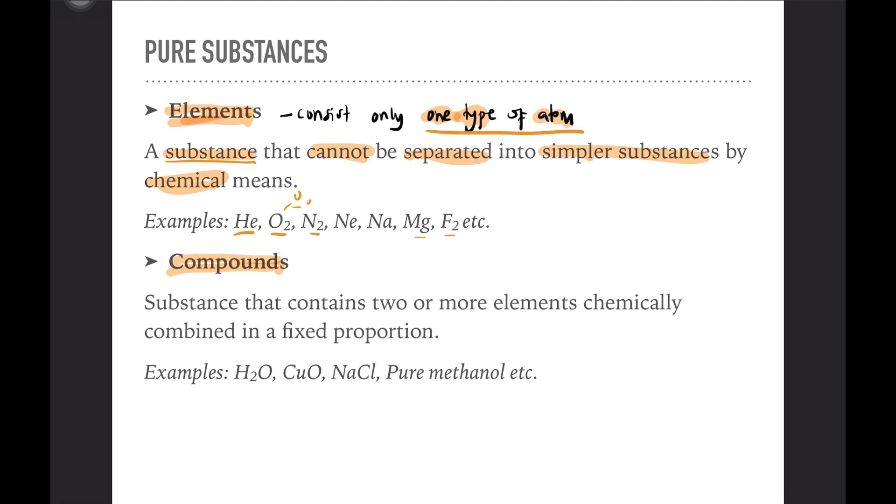Compounds are substances that contain two or more elements chemically combined in fixed proportion. The keyword is it must have two or more elements, or we can say more than one type of atoms.